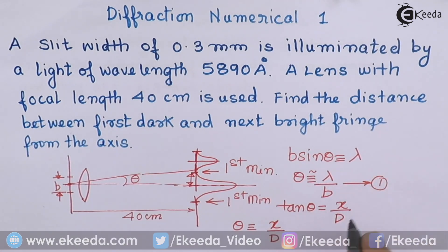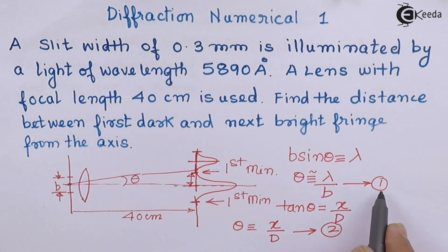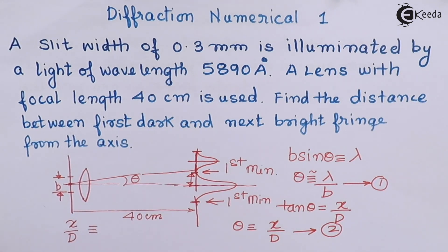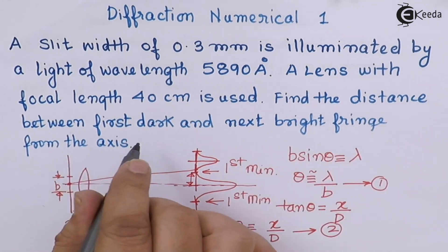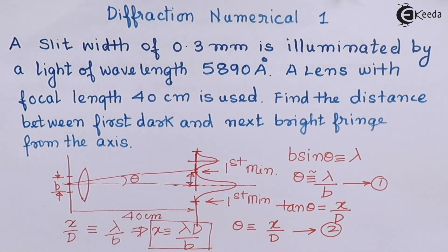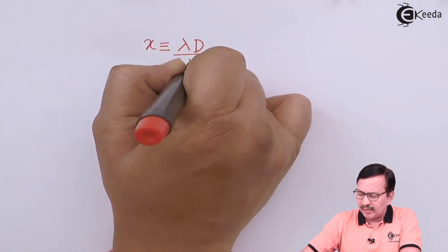I now equate these expressions. If we measure this distance as x, then tan θ = x/d, and since tan θ ≈ θ for small angles, theta equals x/d. Equating the two expressions, x/d = λ/b, or x = λd/b. So with this base, I can now find the distance between the first dark and the next bright fringe from the axis.